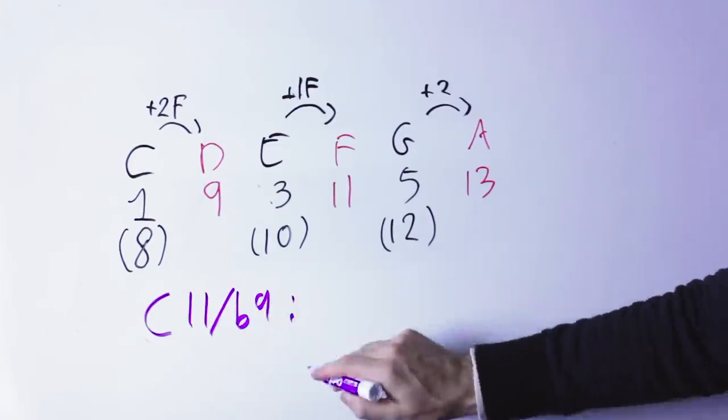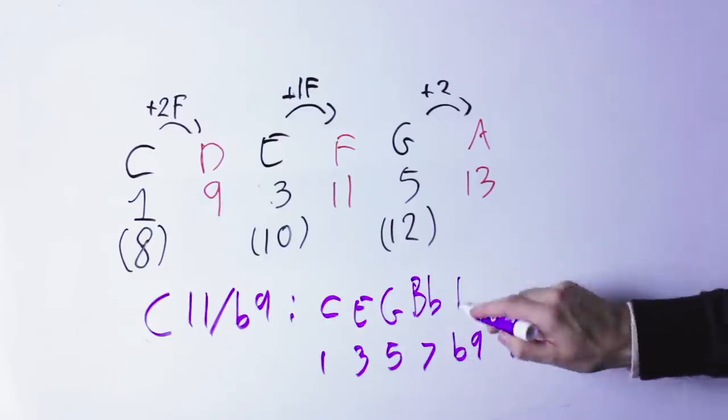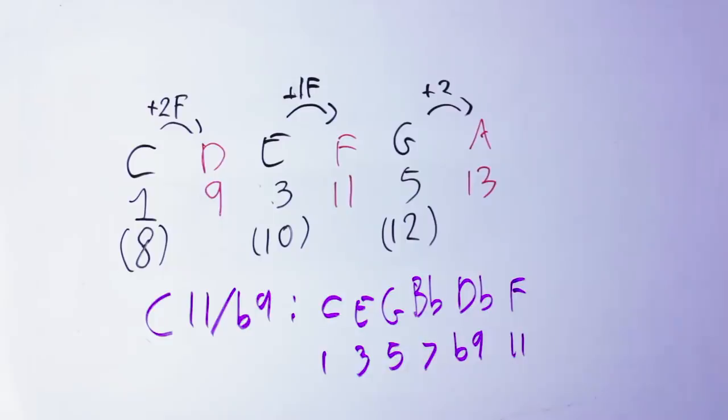Another example, C eleven with a flat nine. First I write a C eleven, which is C, E, G, B flat, D, F, and then I remember it's written flat nine, so I take my nine, my D, down to D flat. So the notes are C, E, G, B flat, D flat, F.